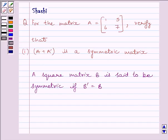First of all, let us understand that a square matrix B is said to be symmetric if B transpose is equal to B. Or we can say the transpose of a matrix is equal to itself. This is the key idea to solve the given question.